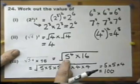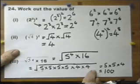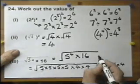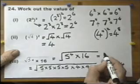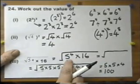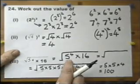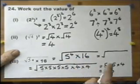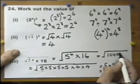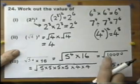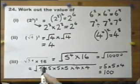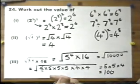You could, of course, work this out another way. There's another way of doing it: you could actually work out 5 times 5 times 5 times 5 times 16, and work it out without a calculator. And you can appreciate the square root of that is, in fact, 100. So, there's more than one way to actually approach that question.